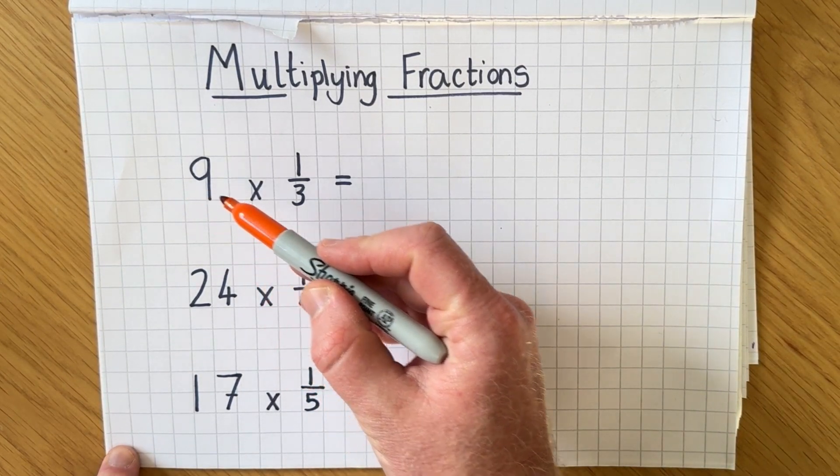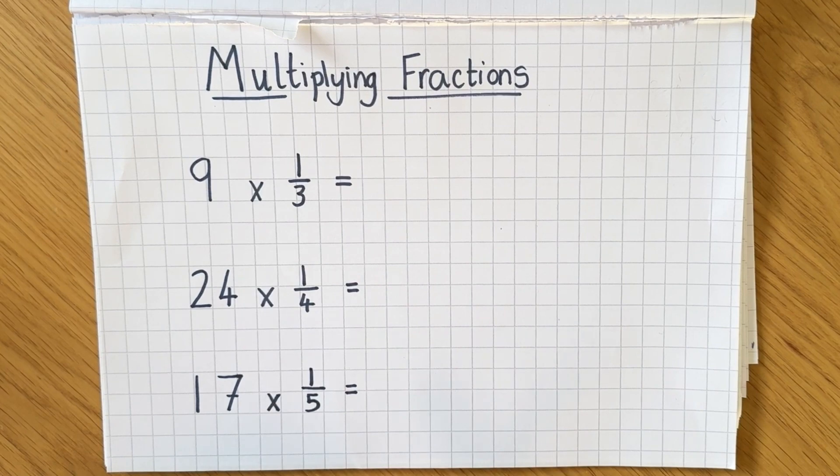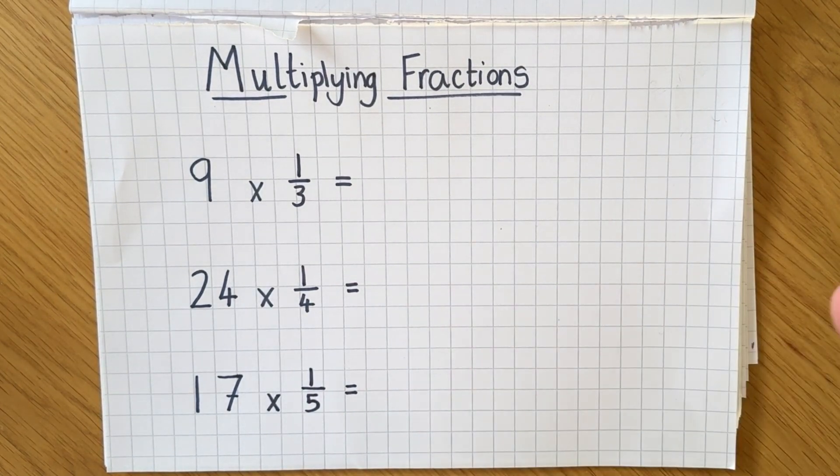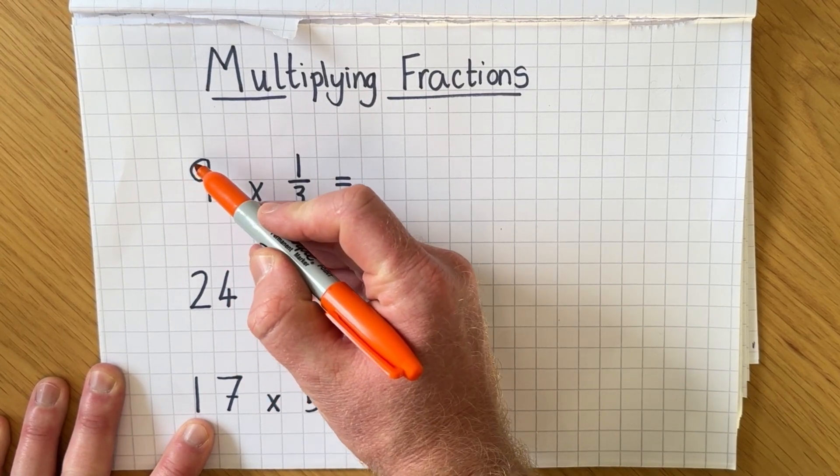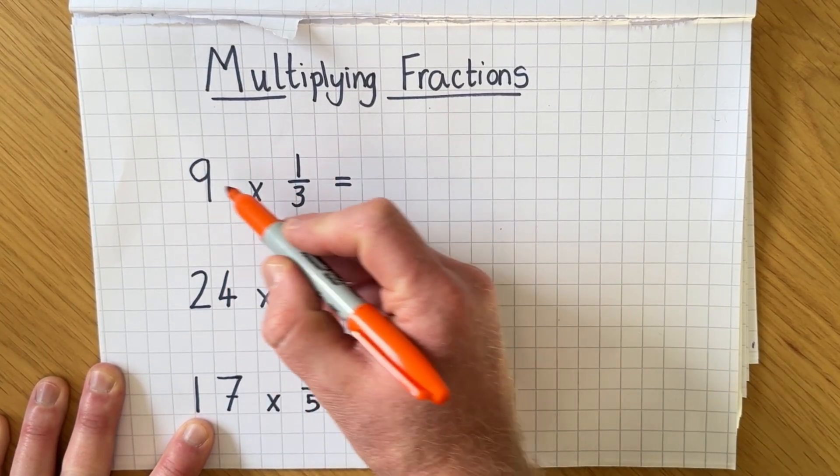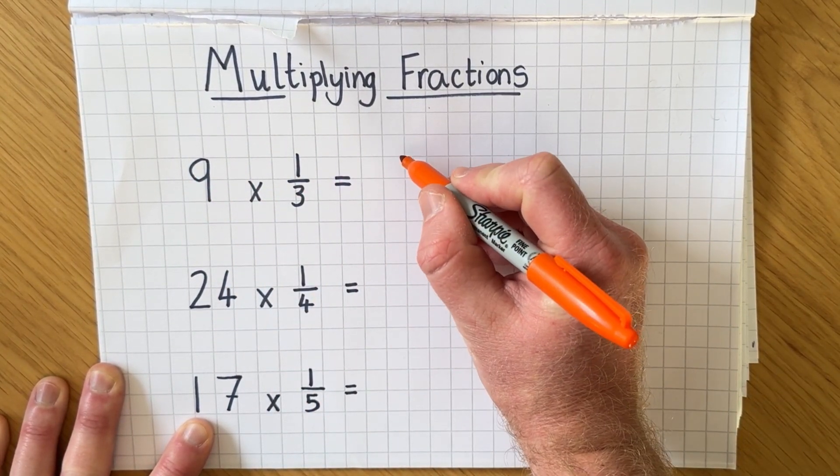So we're going to be doing 9 multiplied by 1/3. Now the magic trick of multiplying fractions is when you have a whole number we're going to convert it into an improper fraction.